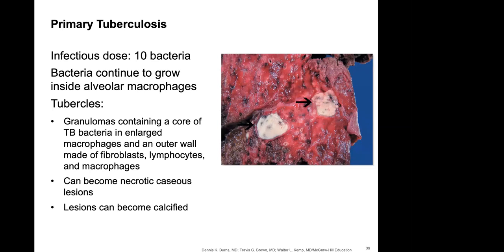The infectious dose of TB is very small — only about 10 bacterial cells. The bacteria continue to grow inside alveolar macrophages, forming granulomas with a core of TB bacteria, enlarged macrophages, and an outer wall of fibroblasts, lymphocytes, and macrophages. These can become necrotic caseous lesions that eventually calcify.